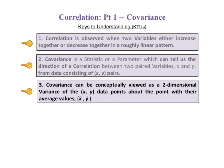The third key says covariance can be conceptually viewed as a two-dimensional variance of the x, y data points about the point with their average values. That is the point x bar, y bar.